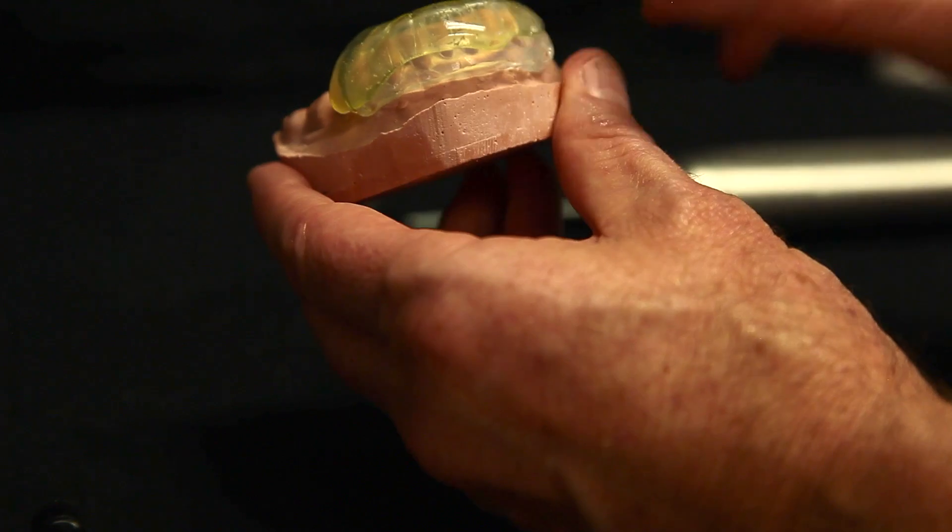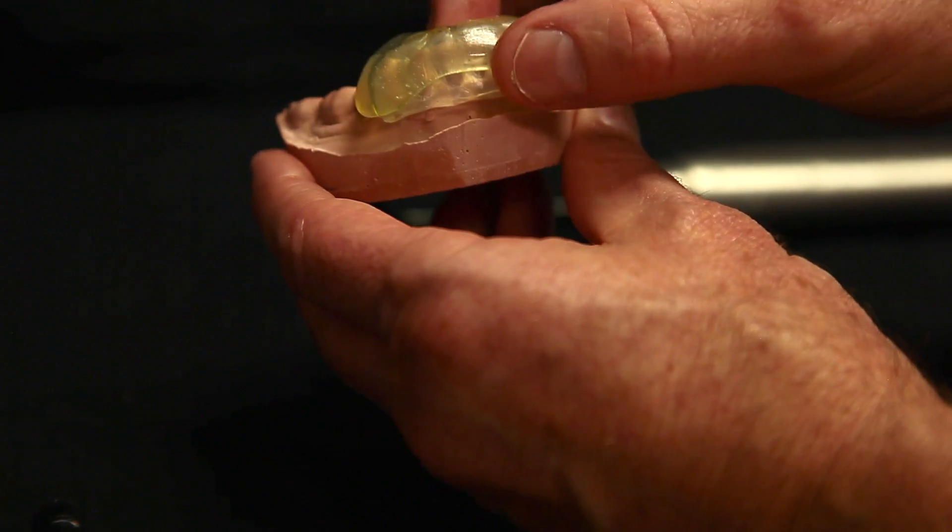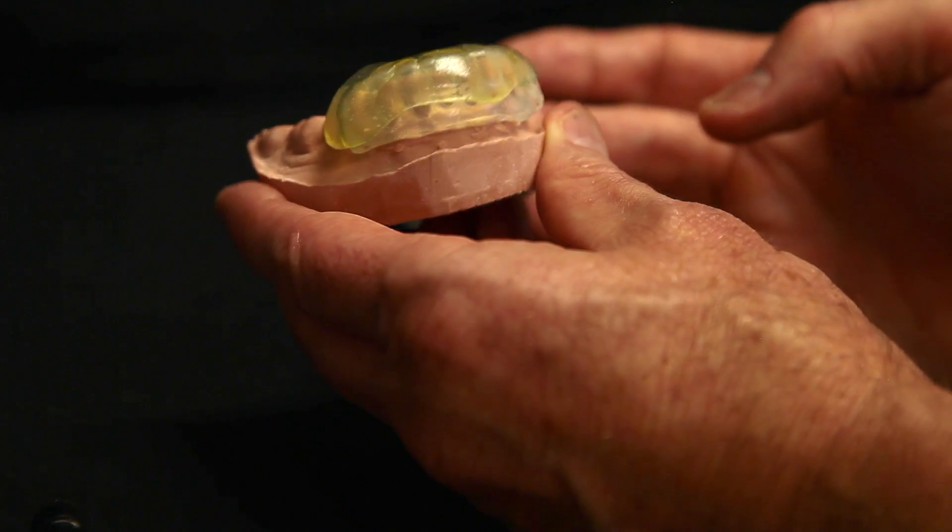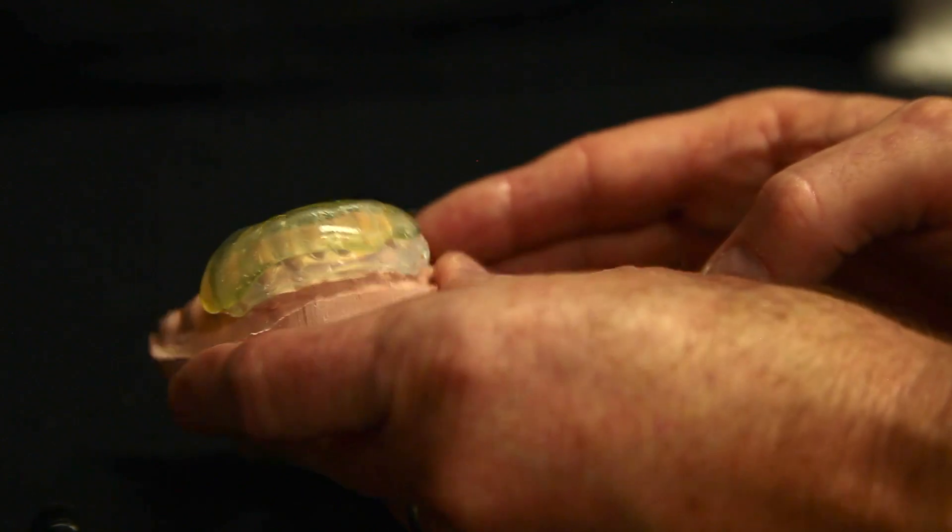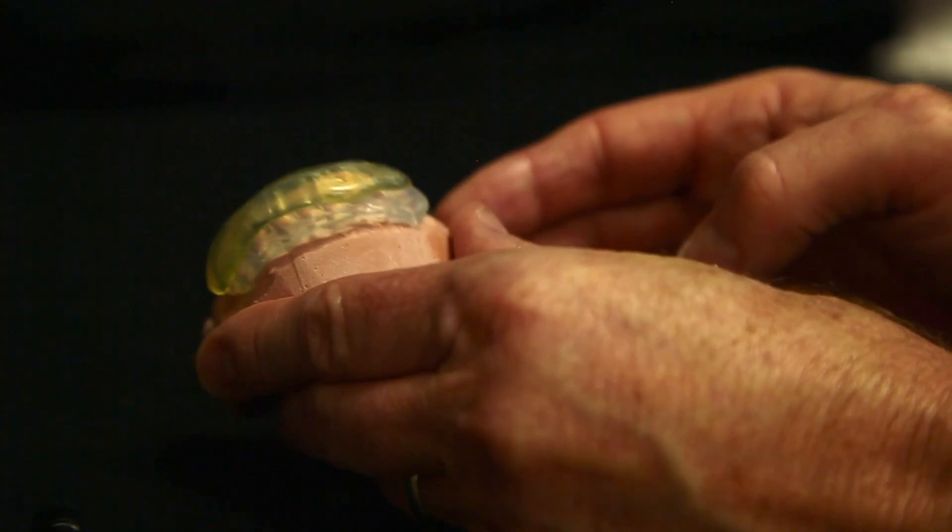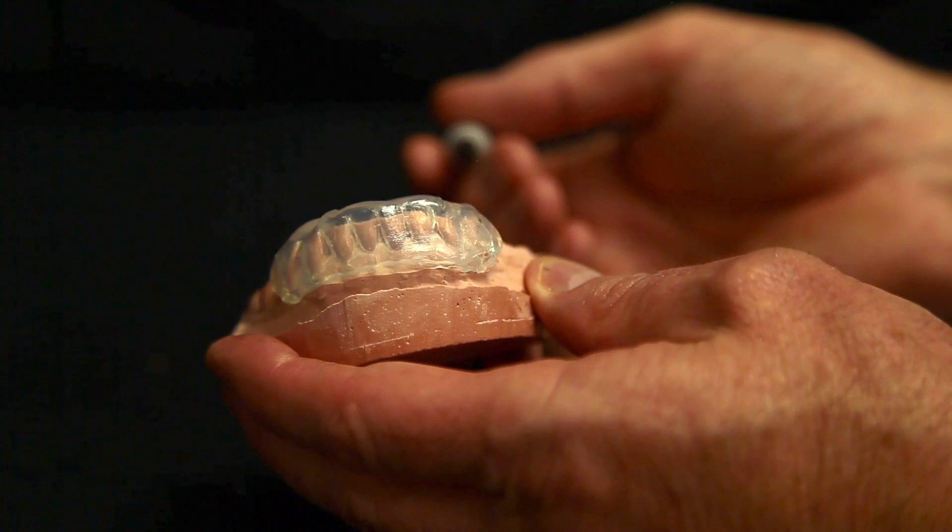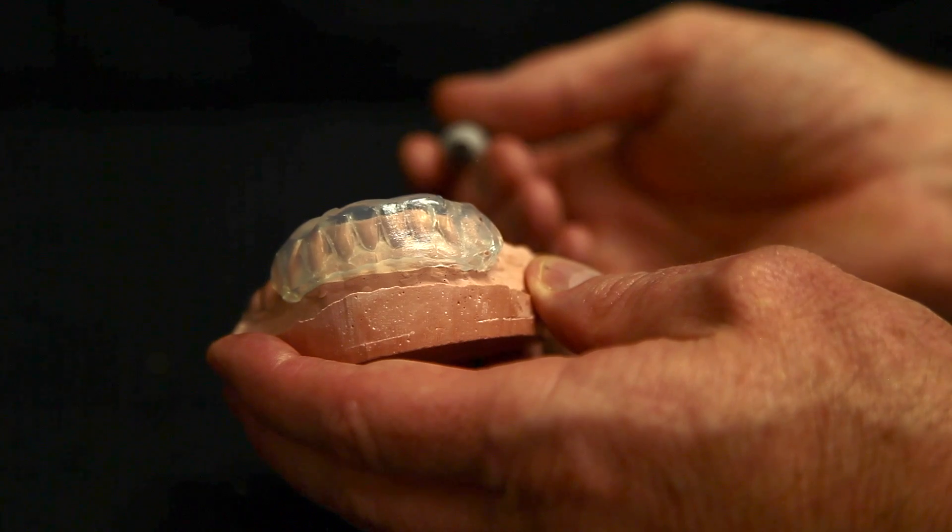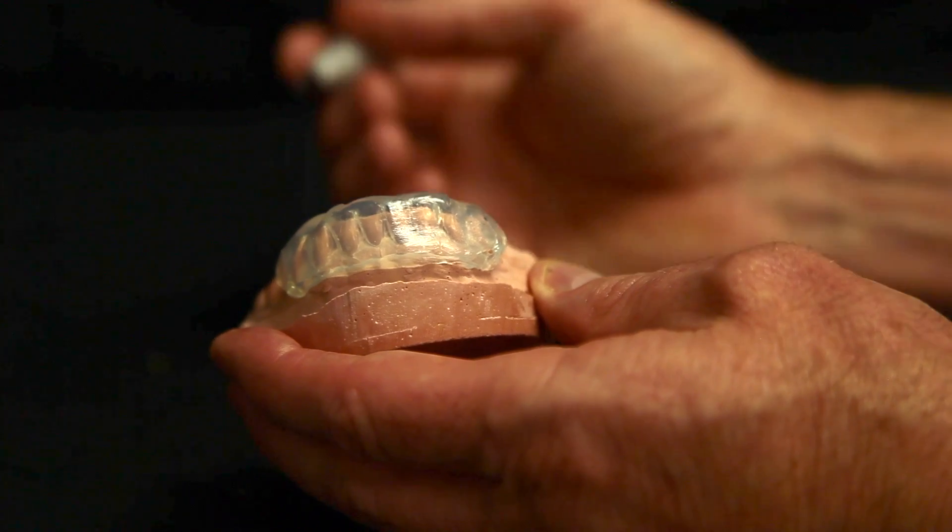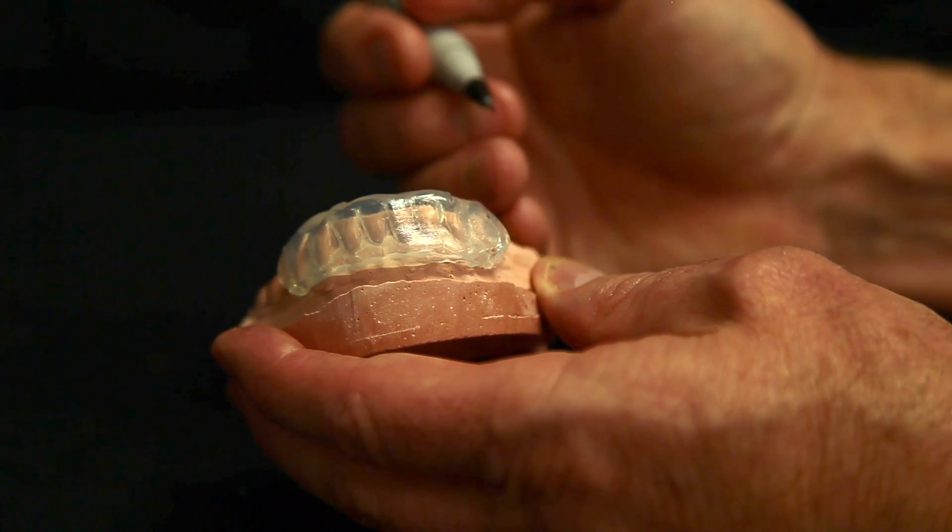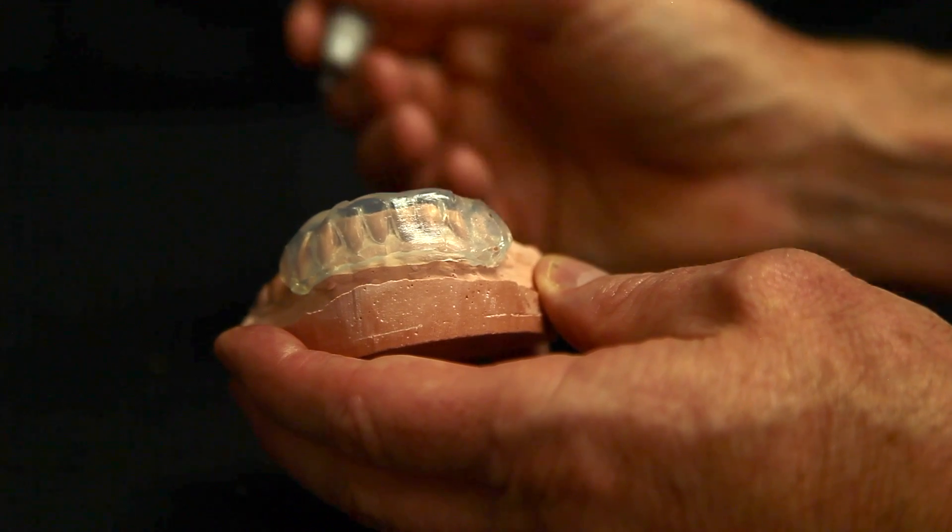After you've done this, you can go ahead and pull this off your wax-up and then put the shell in your Triad unit to finish the curing. But don't put your wax-up in your Triad unit. So the final thing that you'll need to do to prep your matrix to take it to the patient's mouth is decide where you're going to place your vent holes or your access holes.